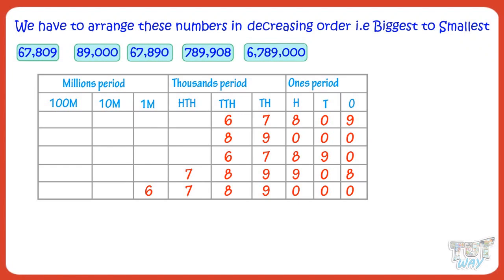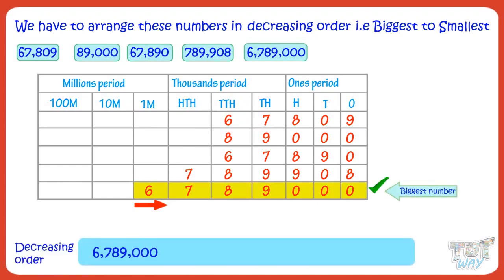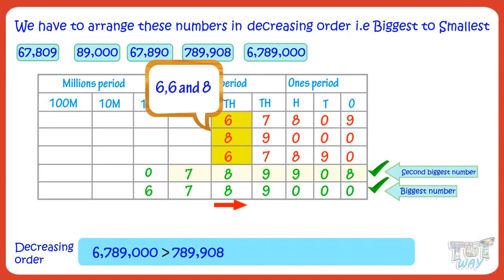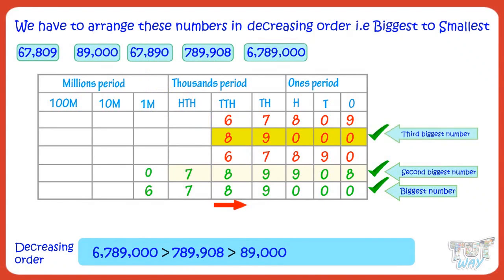Now, in the place value chart, you start at the left and look for the first place where the digits are different to compare the numbers. If we start at left, we have only one number which has a digit at the millions place, so that number is the biggest number. Now, we have only one number which has a digit at the hundreds of thousands place, so it's the second biggest number. Now we have three numbers which have their leftmost digits at the 10,000 place, and the digits are 6, 6, and 8. The number which has the biggest digit — that is 8 — is the third greatest number.